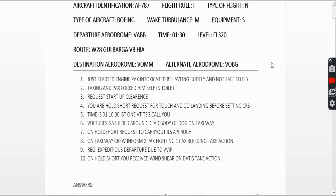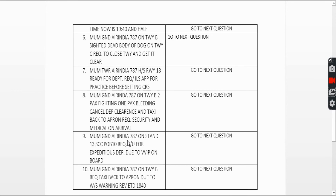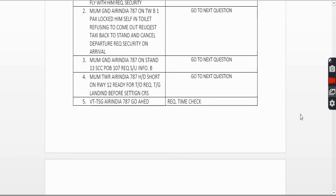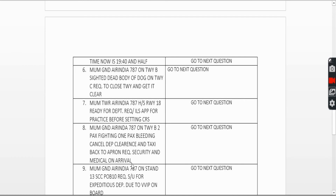Eighth question: on the taxiway, crew informs you two passengers are fighting and one passenger is bleeding. Similar to the first and second questions, the call is: 'Mumbai Ground, Air India 787 on taxiway Bravo, two passengers fighting, one passenger bleeding, cancel departure clearance, taxi back to apron, request security and medical on arrival.' We add medical because one passenger is bleeding.